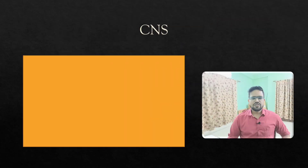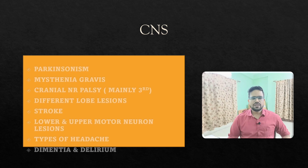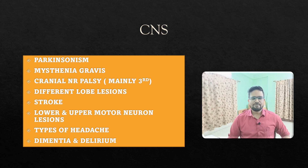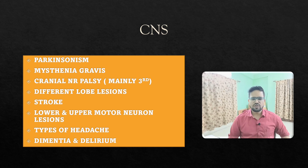For CNS, the most important topics UPSC CMNS is asking are: Parkinsonism, myasthenia gravis, and cranial nerve palsies — mainly third nerve palsy is asked again and again. Also important are different lobe lesions such as frontal and parietal lobe, stroke, upper and lower motor neuron lesions — a very favorite topic — types of headache, and dementia and delirium, which are asked repeatedly.